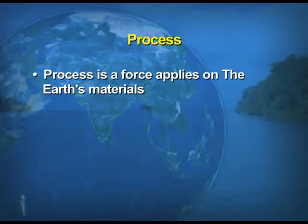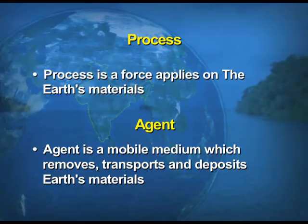A process is a force which acts on the earth's material. An agent — examples being river, wind, and glacier — is a mobile medium which removes, transports, and deposits the earth's material at some other place. That is the action of the agents.